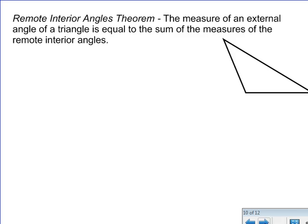The proof we're going to do states that the measure of an external angle of a triangle is equal to the sum of the measures of the remote interior angles.